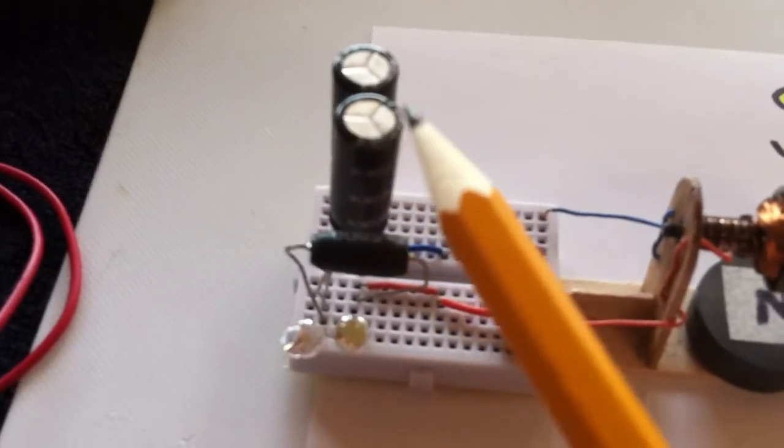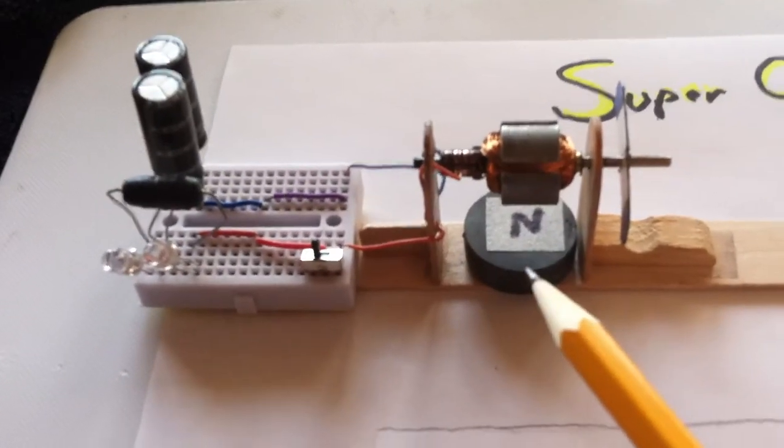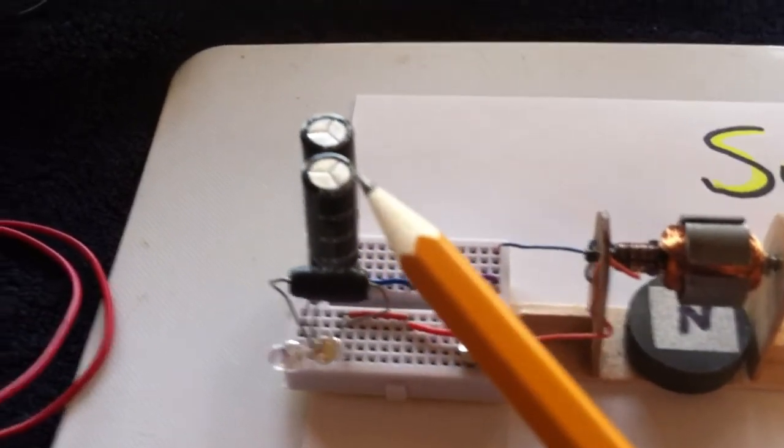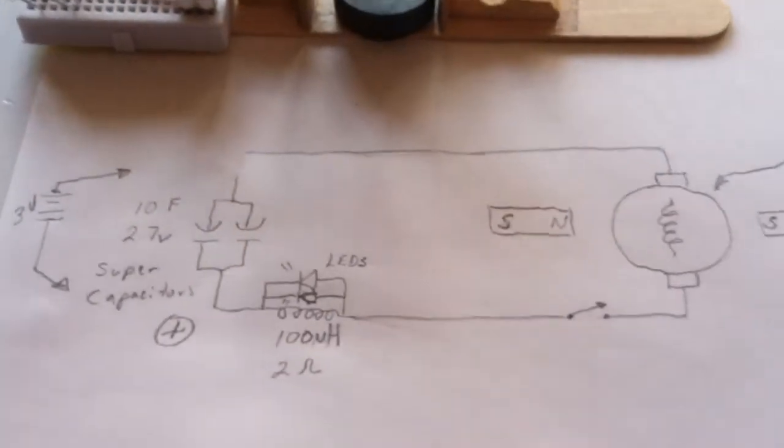With some super caps and a coil, some LEDs, and an on-off switch. I've preloaded these super caps with about 3 volts from a battery, and this is the circuit that I've got set up here.